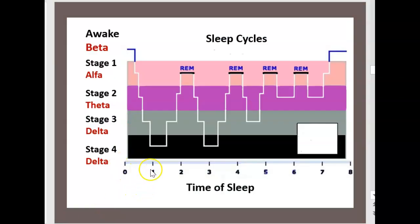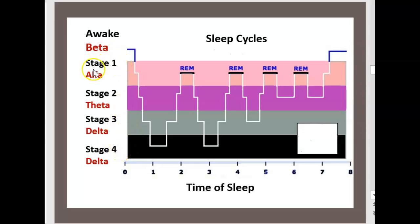Let's have a look at this diagram of sleep. There is the awake stage, then stage one, stage two, stage three, and stage four. Every stage is characterized by a typical wave. Stage one is characterized by alpha waves, stage two by theta waves, stage three and stage four by delta waves.